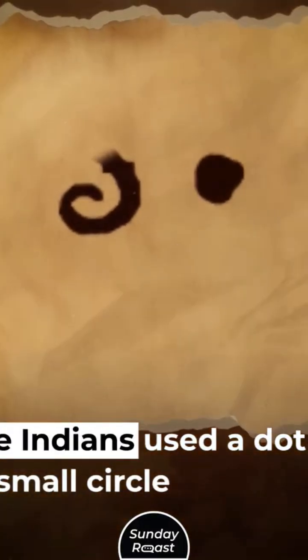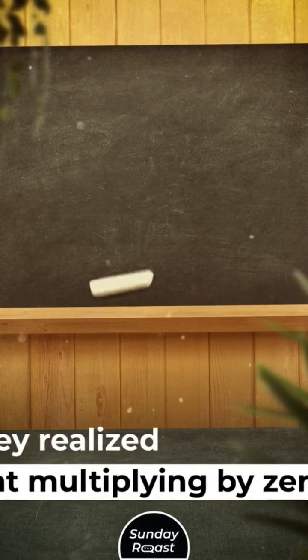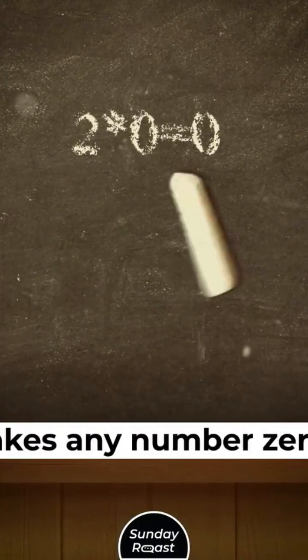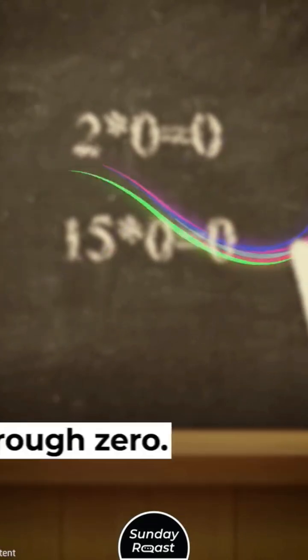The Indians used a dot or small circle to represent zero. They realized that multiplying by zero makes any number zero. Indians also grasped the concept of infinity through zero.